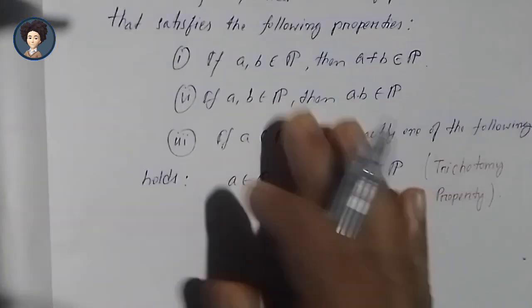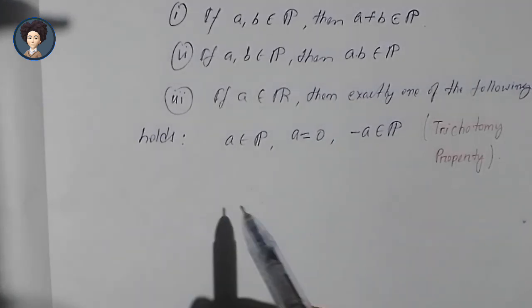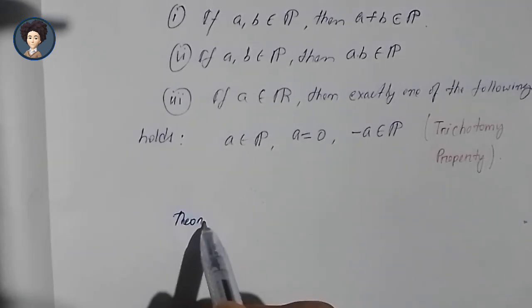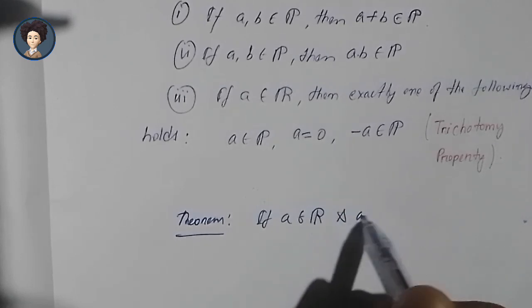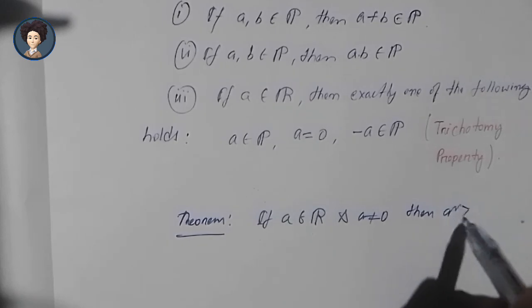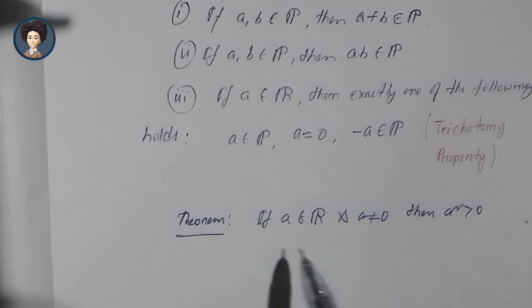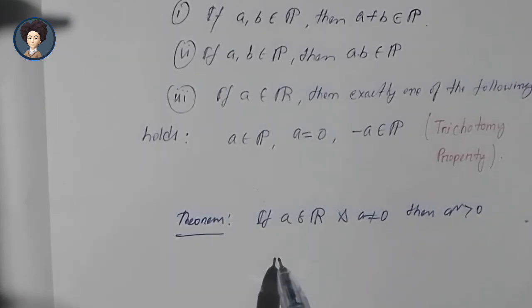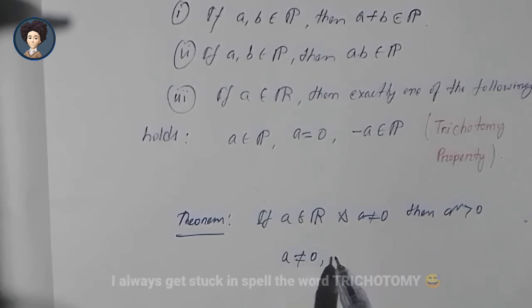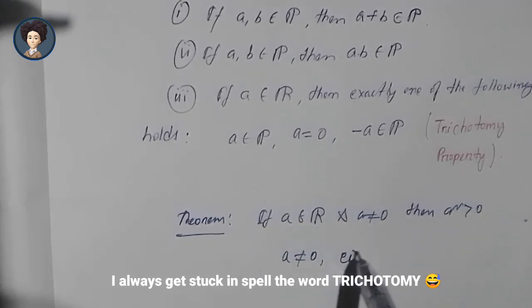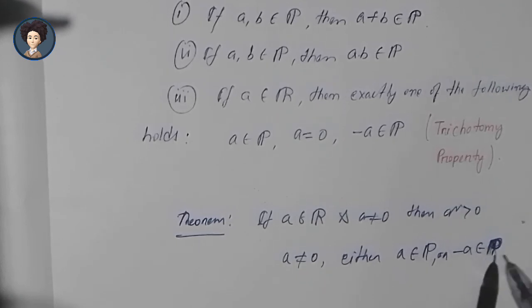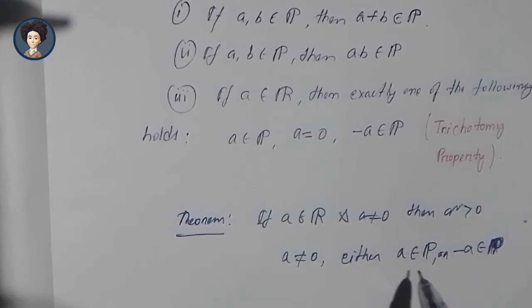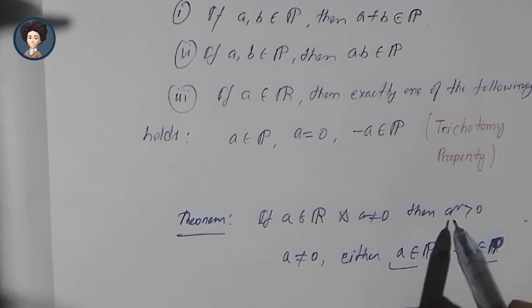To perform our proof we also need a theorem: if A belongs to ℝ and A is not equal to zero, then A squared is greater than zero. Let's prove this. If A is not equal to zero, then by the trichotomy property, either A belongs to P or minus A belongs to P — two possibilities to consider.